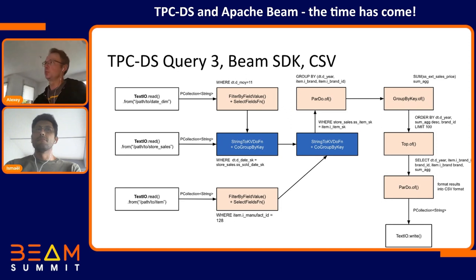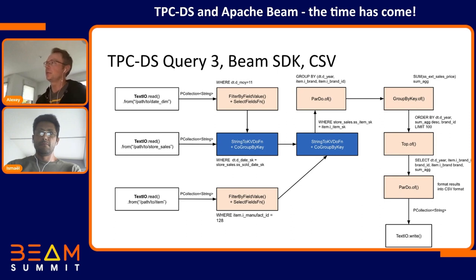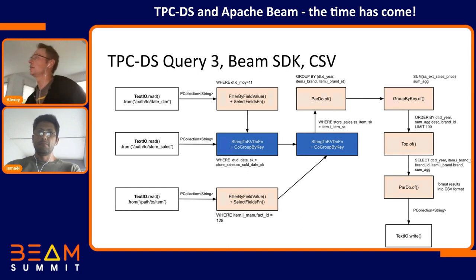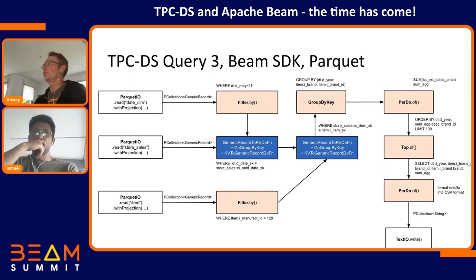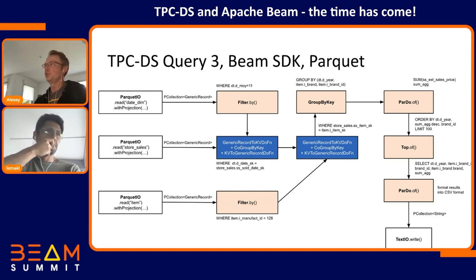We also decided to implement the same Query 3 using the pure Beam Java SDK for different input formats, without any SQL transform at all — just implementing everything as a hand-written pipeline in Java. Here we need to convert from strings to key-value pairs, run a GroupByKey transform on top of them, and then convert back, which takes some additional operations that are not good for performance. For the Parquet format the pipeline is similar but with some additional DoFns. In this case we didn't want to use Beam schema — we just wanted to compare pure string or generic record implementations versus Beam SQL.